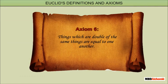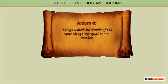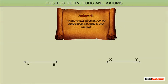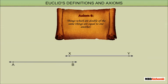Axiom 6: Things which are double of the same things are equal to one another. Example: consider two equal lines AB and XY, then 2AB is equal to 2XY.